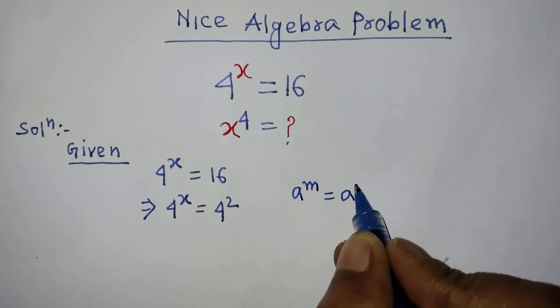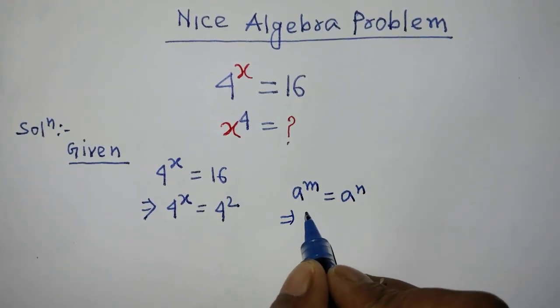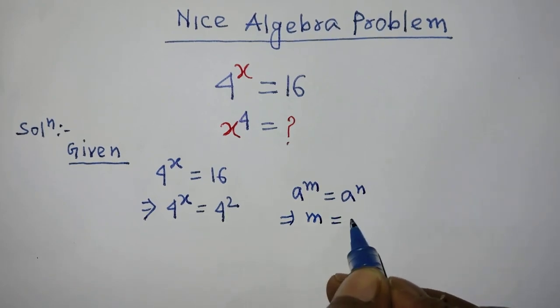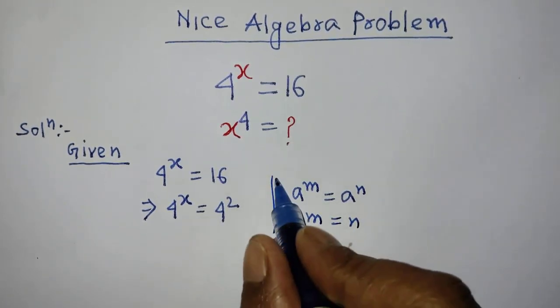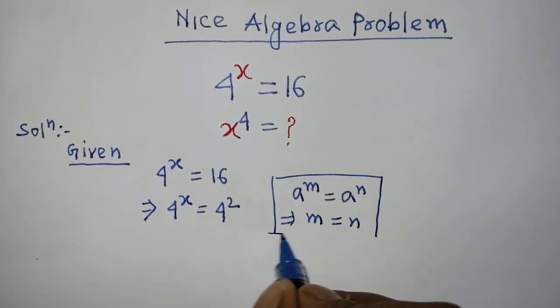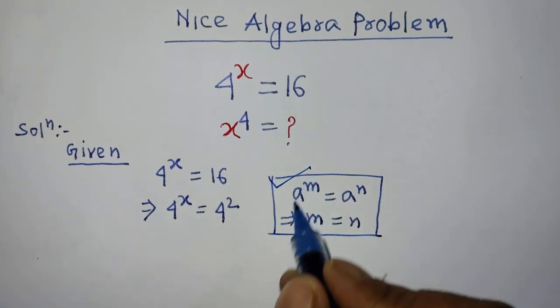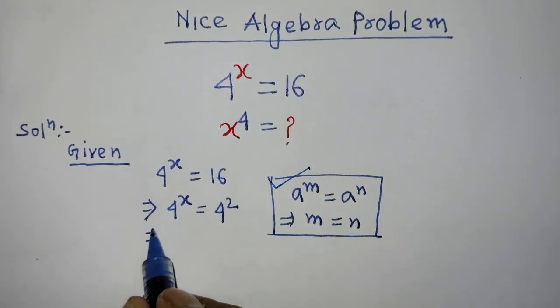This implies that m is equal to n. So according to this formula, we can cancel the base 4 from both sides of this equation.